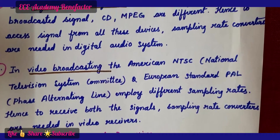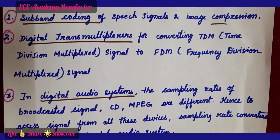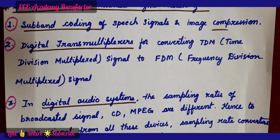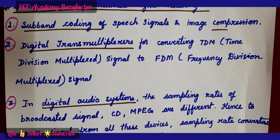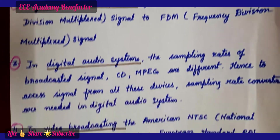The four main applications of multirate signal processing are: subband coding, digital transmultiplexers for converting TDM to FDM signals, digital audio systems, and radio broadcasting systems.